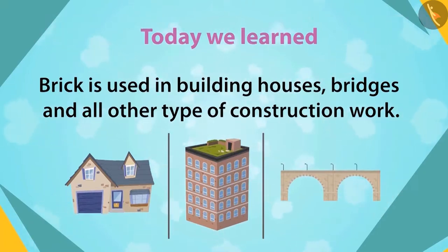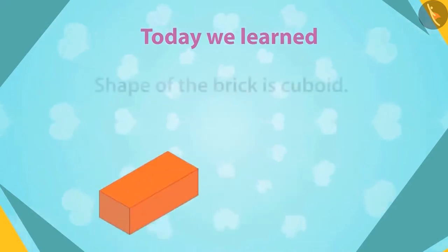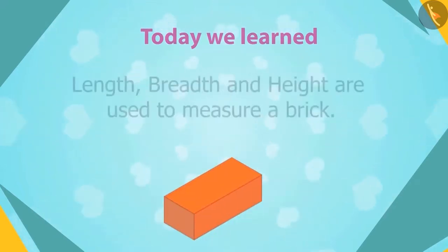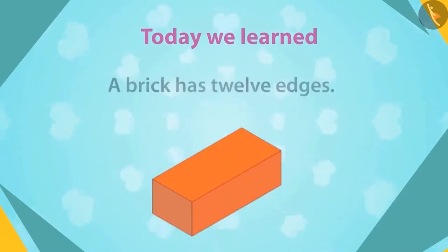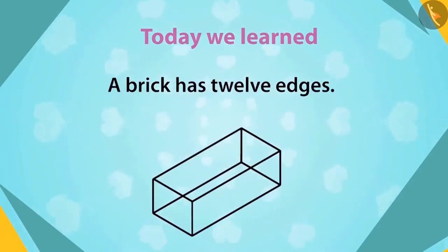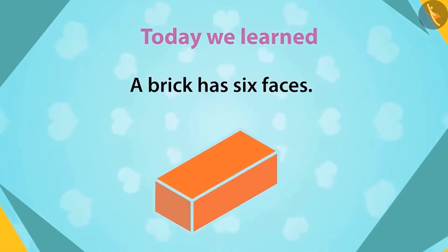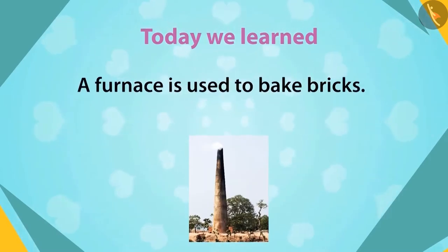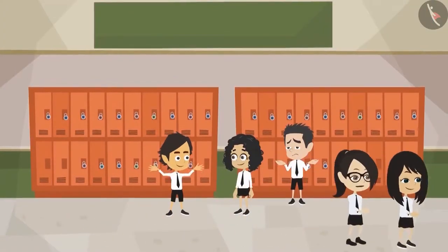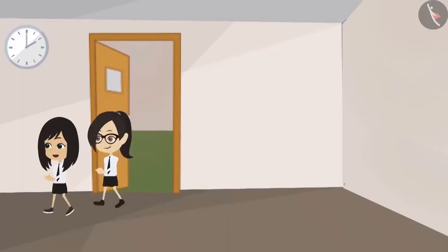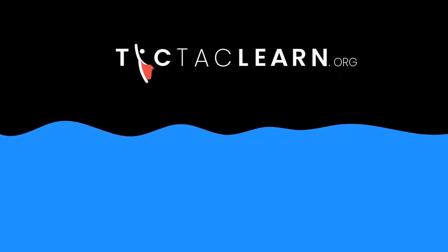The shape of a brick is a cuboid. The size of a brick is determined by measuring its length, breadth, and height. A brick has 12 edges. A brick has 6 faces. Bricks are baked in a furnace. I am waiting for tomorrow because the engineer sir will bring different sizes of bricks to show us. Me too. Thank you.